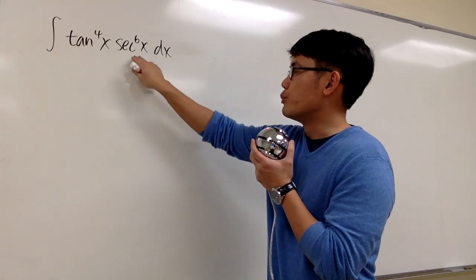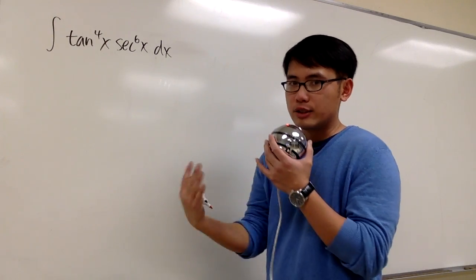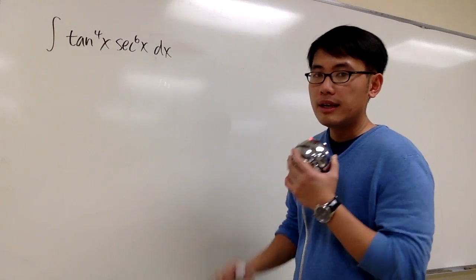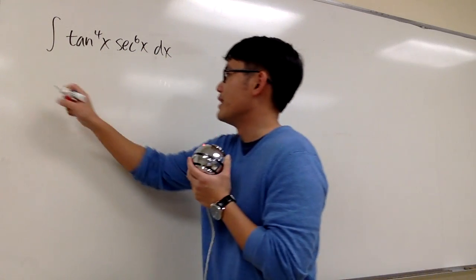We do have a chance to break this apart and then somehow squeeze out a secant squared. Here, we have secant to the sixth power. Let's do that and hope for the best, and it will be the best.